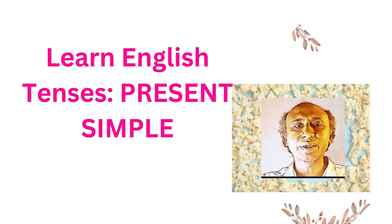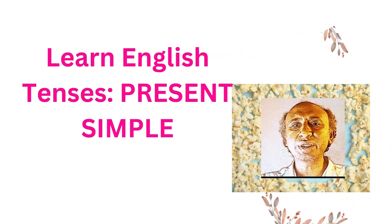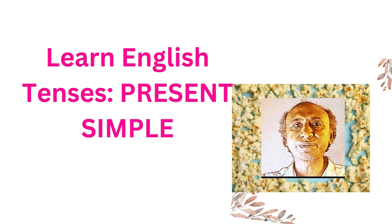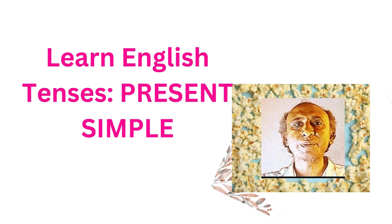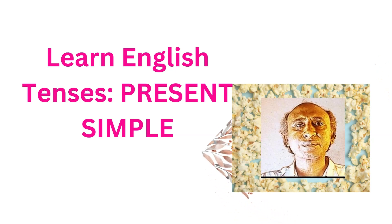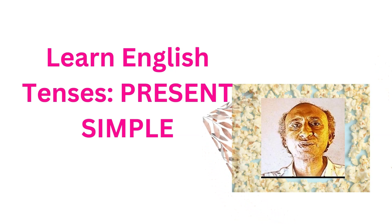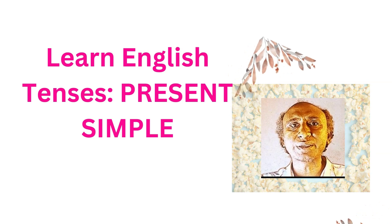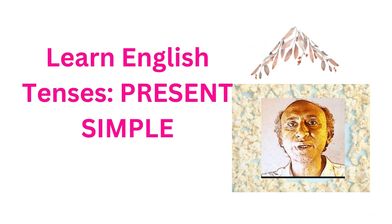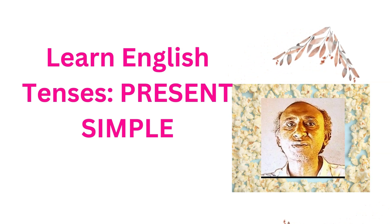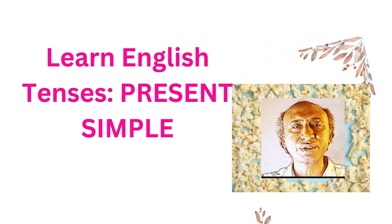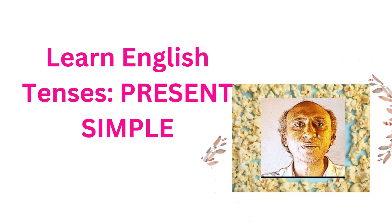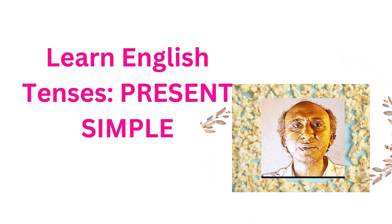Welcome to my lesson. Today's lesson is all about the present indefinite tense. The present indefinite tense is used to talk about actions that happen regularly, habits, general truth, and scheduled events. It is formed by using the base form of the verb.